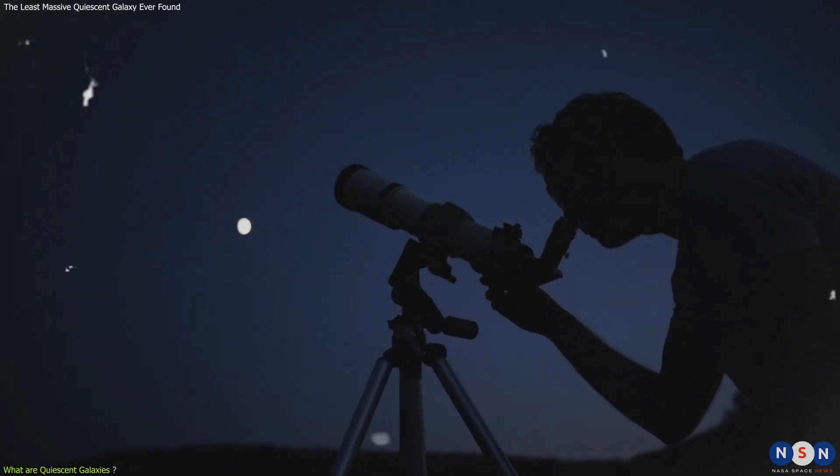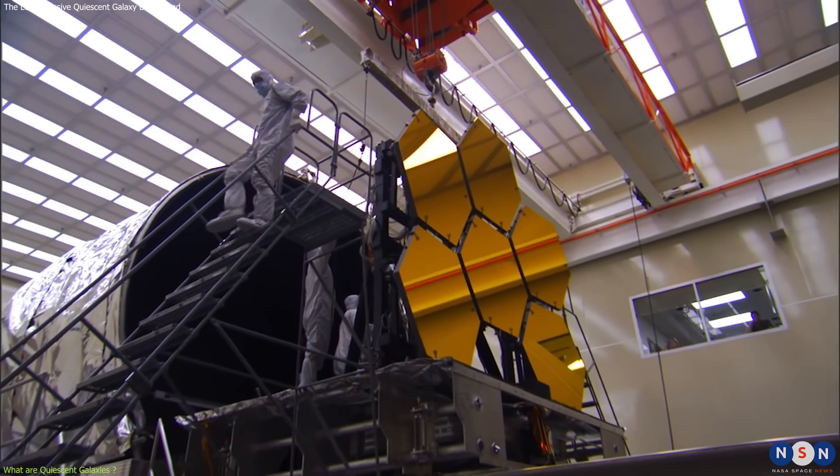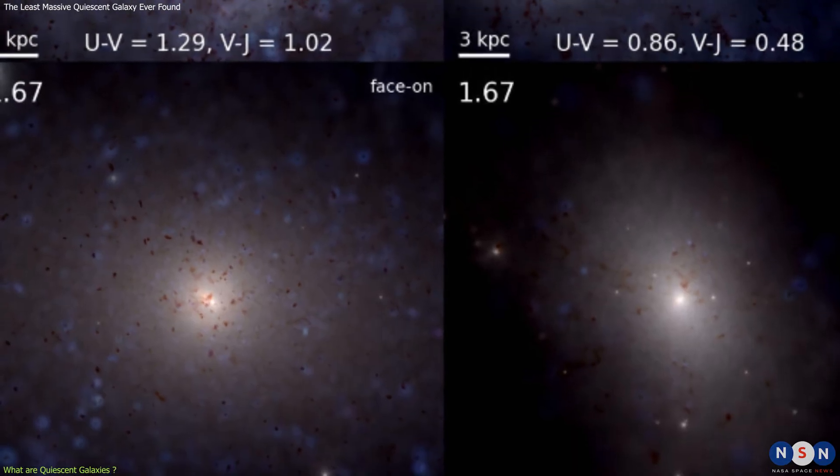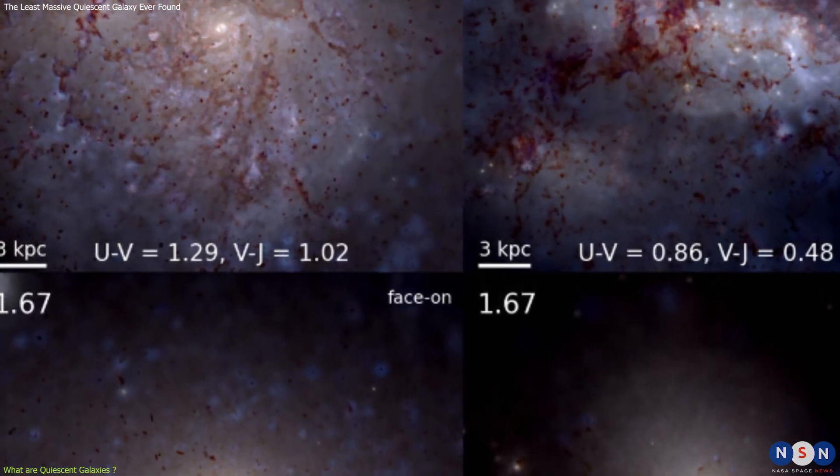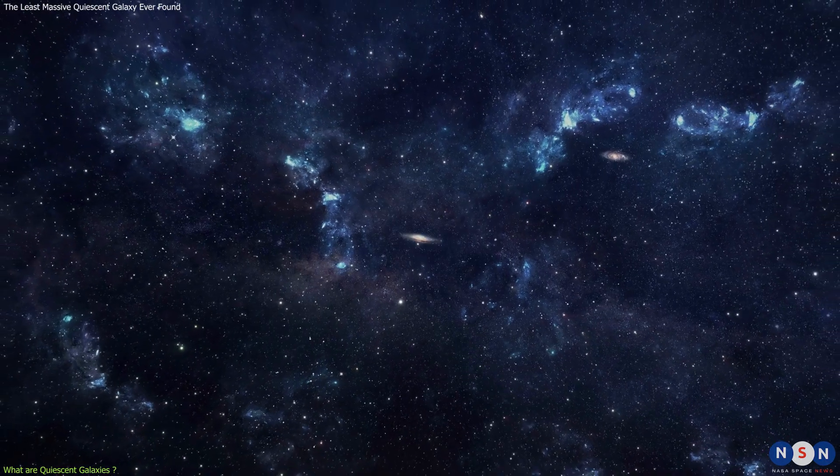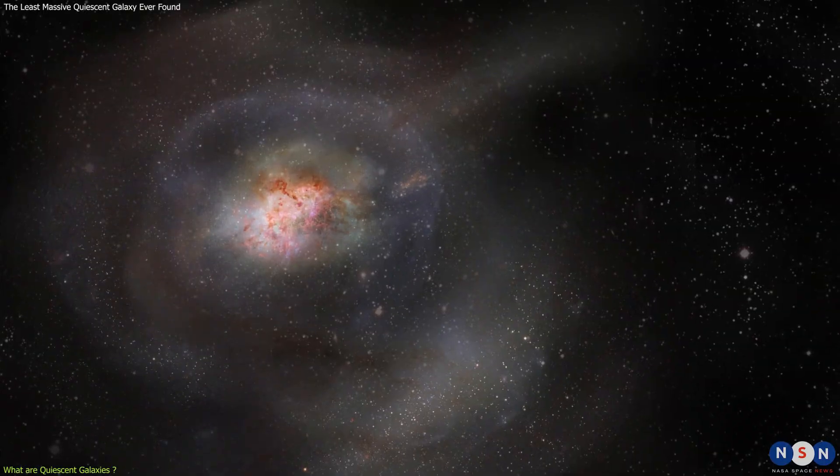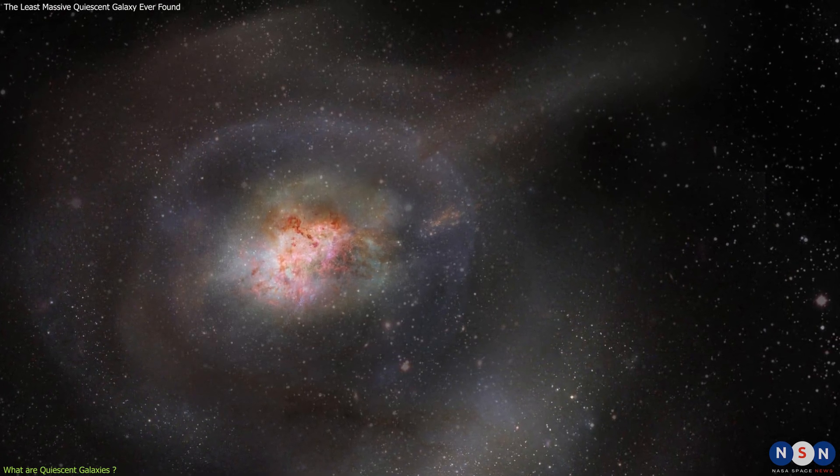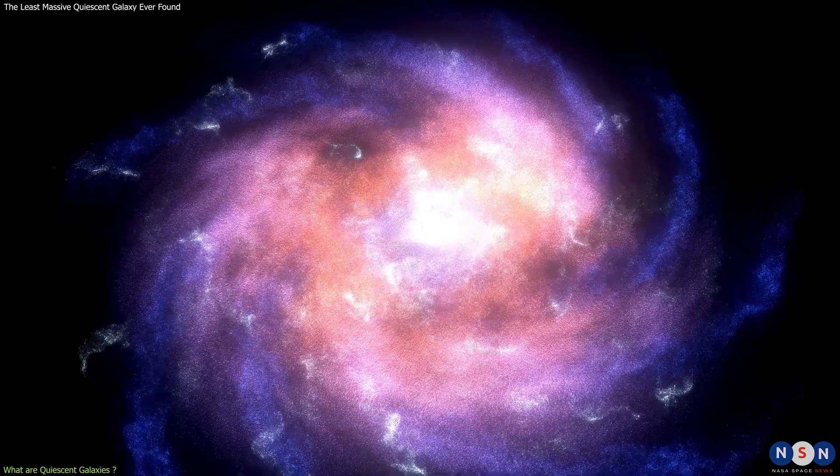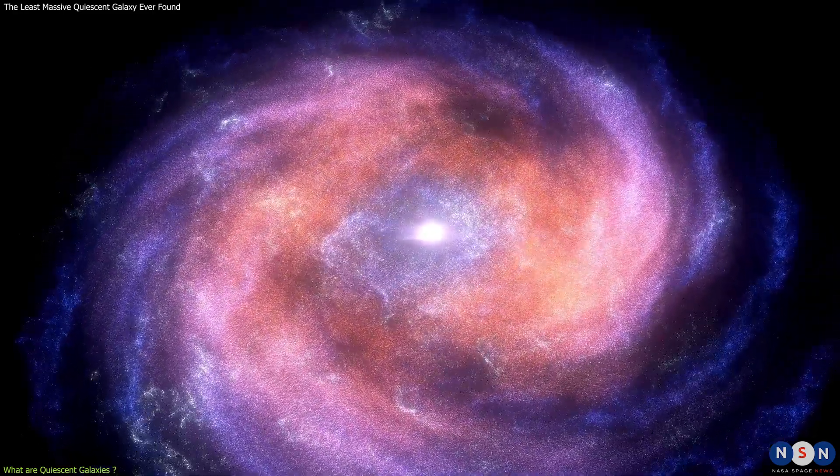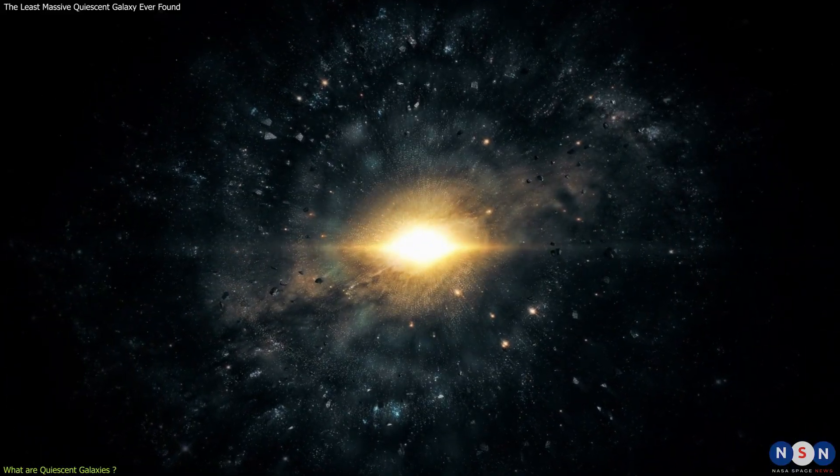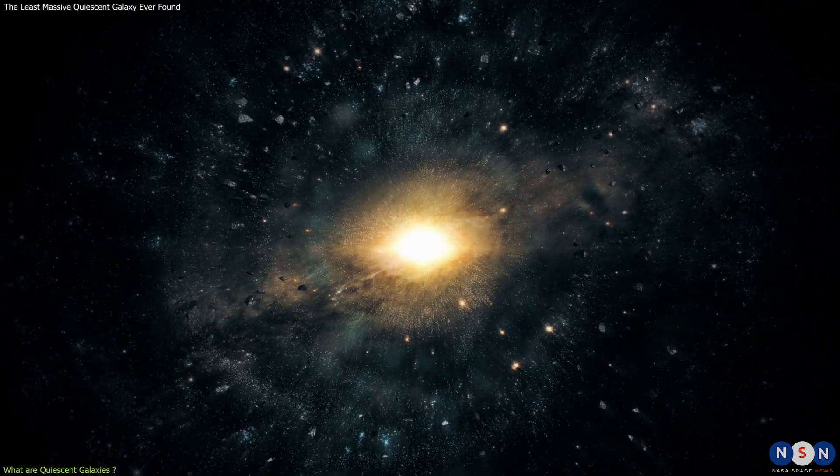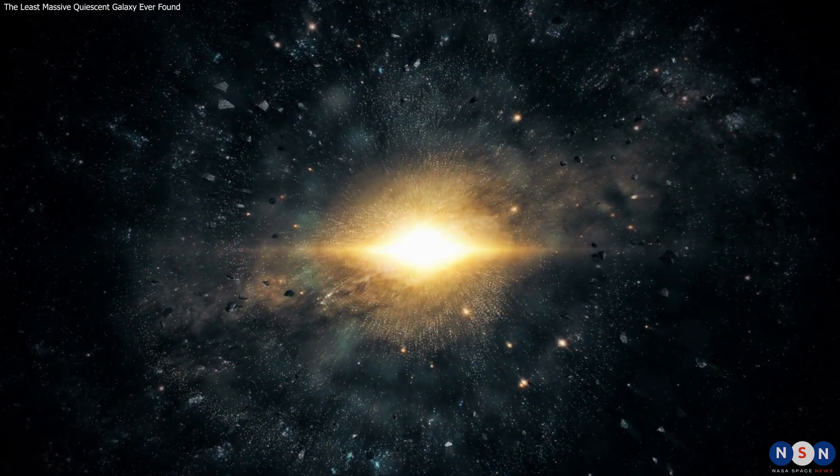Since the beginning of astronomy, quiescent galaxies have been observed, but with the development of modern telescopes and instruments, they have become much more common and easier to study. Especially in the last few decades, astronomers have discovered many quiescent galaxies at high redshifts, meaning they are very far away and seen as they were in the early universe. These newly discovered quiescent galaxies are very surprising and puzzling because they challenge our understanding of how galaxies form and evolve. How can such massive and compact galaxies exist so early in the history of the universe? How can they stop forming stars so quickly and efficiently? What mechanisms are responsible for quenching their star formation?